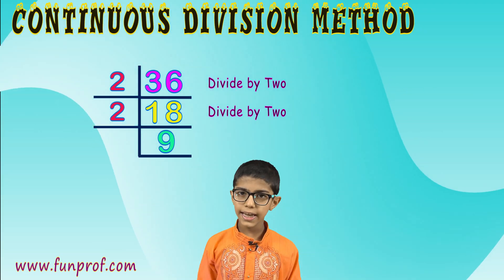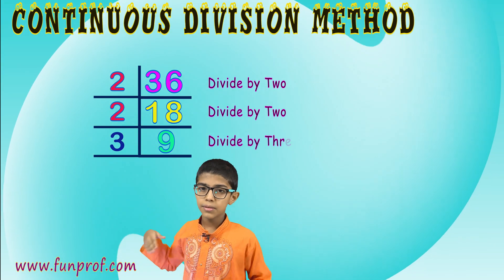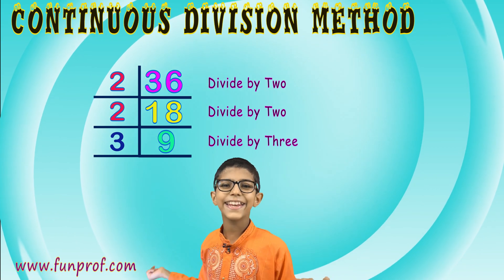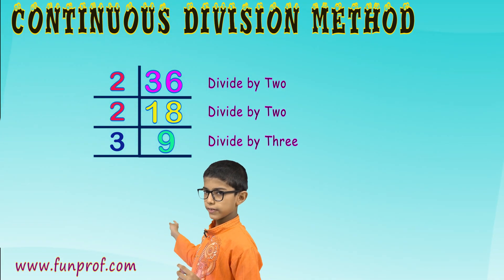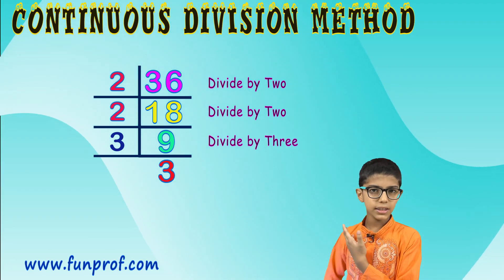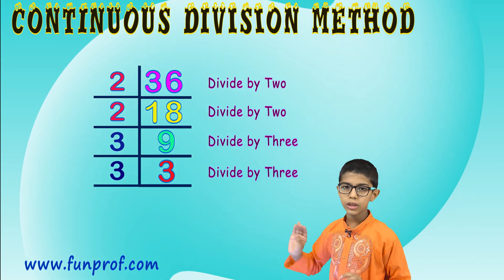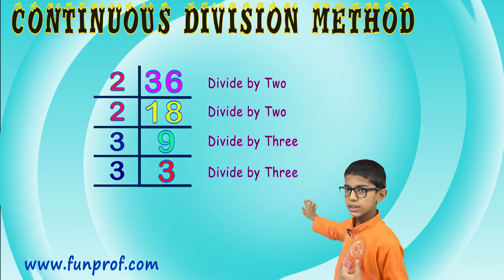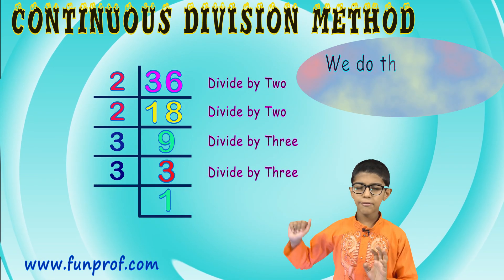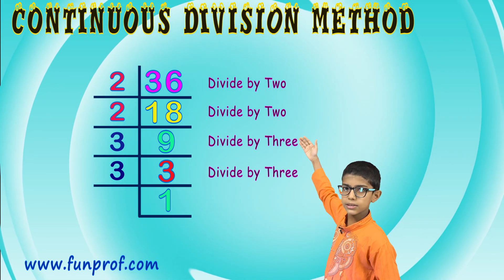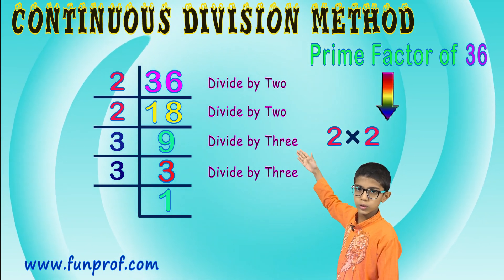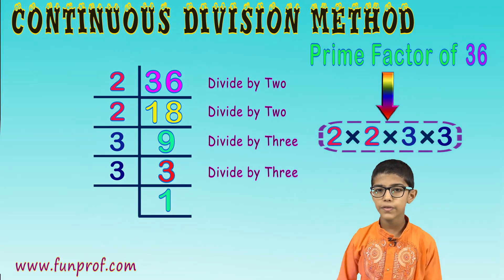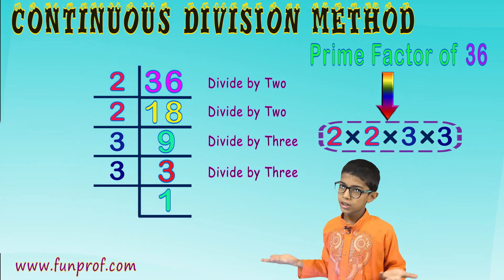We make another L shape. We can't divide 9 by 2, so we divide by 3 and get 3 again. We divide that 3 by 3 because it's not divisible by 2, and we get 1. We continue until we get 1 at the end. The prime factors of 36 are 2 × 2 × 3 × 3 — the same factors we got with the factor tree method.